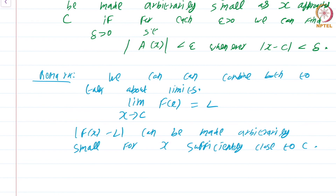Instead of saying 'limit as x goes to c of f(x) equals L just means that given any epsilon greater than 0 there is a delta greater than 0, blah blah blah,' you can just say |f(x) − L| can be made arbitrarily small for x sufficiently close to c. This is a concise statement, but with the preceding definitions it is also a very precise one, and it is a nice way of thinking about limits. We have translated our intuition into rigorous mathematics via epsilon-delta. Now that we have processed and understood it and made it part of our circulatory system, it is best to go back and use words with more expressive meanings like 'arbitrarily small' and 'sufficiently close'.